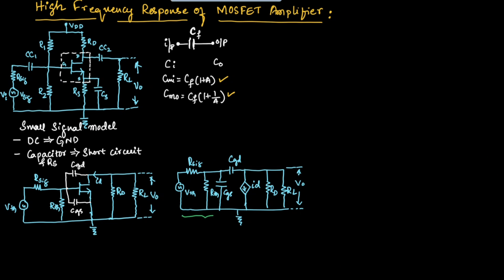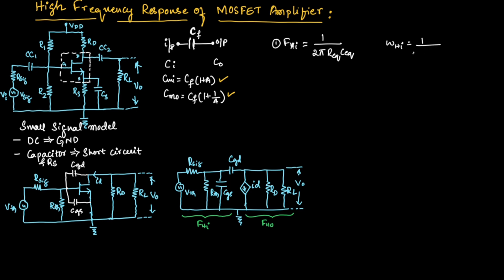Here we will get two frequencies: FHI, the high frequency across the input, and FH0, the high frequency across the output. The formula for frequency is 1 divided by 2π RC, so we need to find R equivalence and C equivalence. Similarly, the angular frequency omega HI is given as 1 divided by R equivalence into C equivalence.